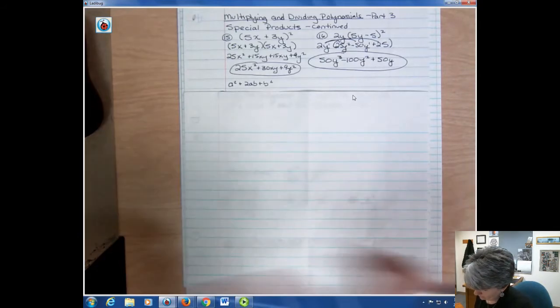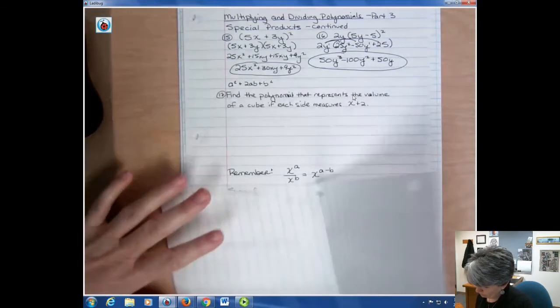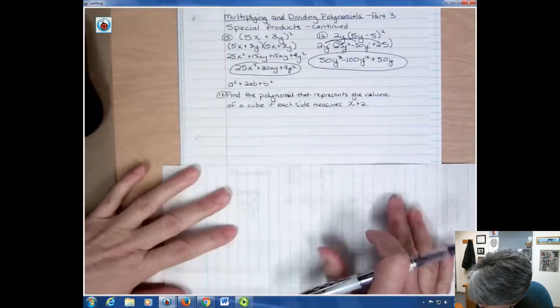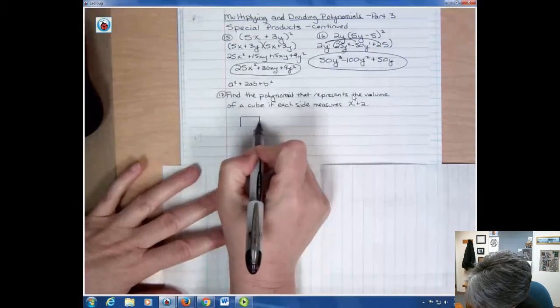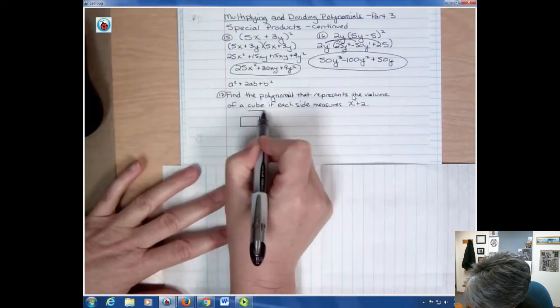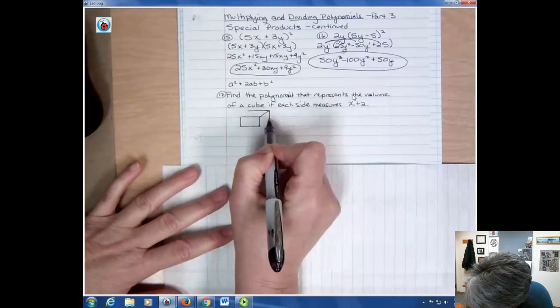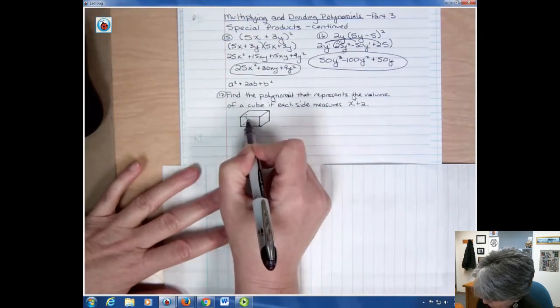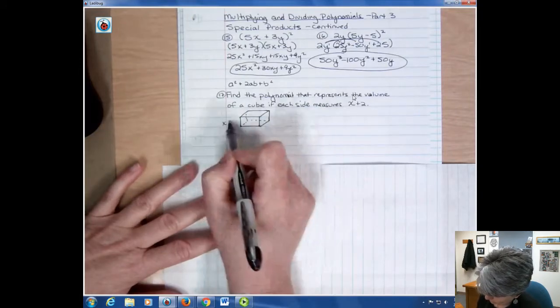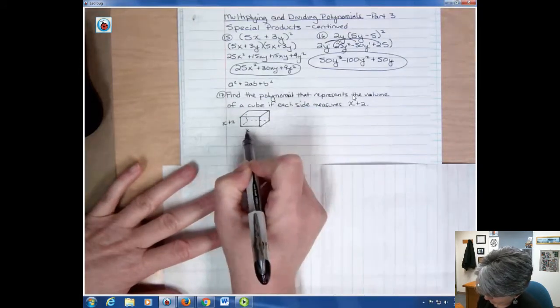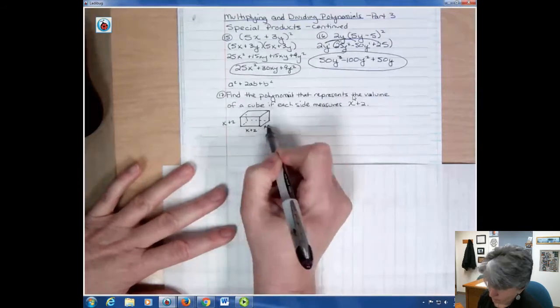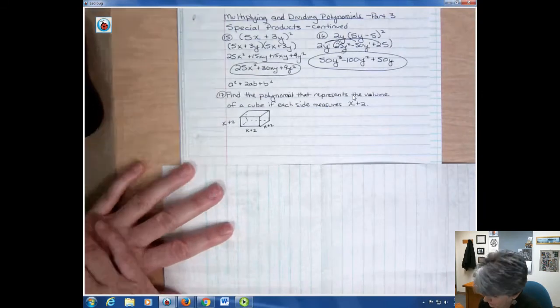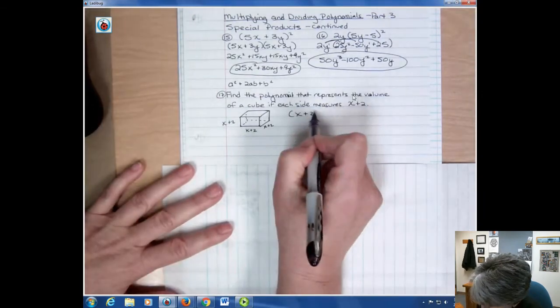Okay this one says find the polynomial that represents the volume of a cube if each side measures x plus 2. So when you think about a cube I'm not very good at drawing them so give me a break. But if this was a cube then all the sides would be the same. Right? So I'd have this is x plus 2, this is x plus 2, and this is x plus 2. The height, the width, and the length.